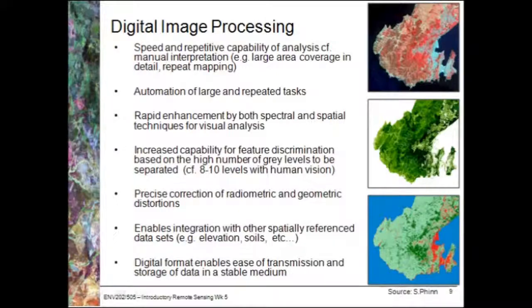What does digital image processing have to do with remote sensing, and why do we actually do it? Really, what we're talking about is obtaining imagery and using a computer-based image processing system to perform a number of tasks to provide information to us from our digital image data. By creating processes that we go through, we increase the speed and repetitive capability of our analysis, compared to manual interpretation. When we looked at manually interpreting aerial photos, here we're really looking at how we tell a computer to do this digitally for us.